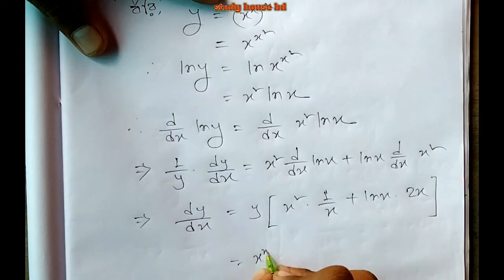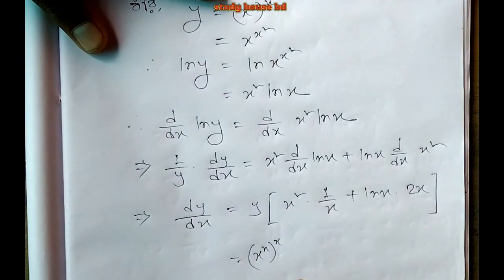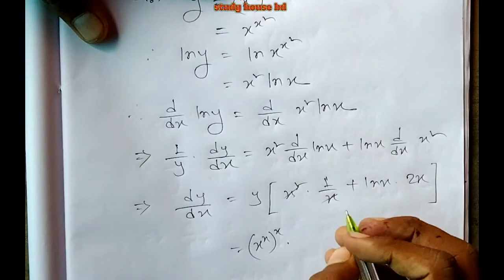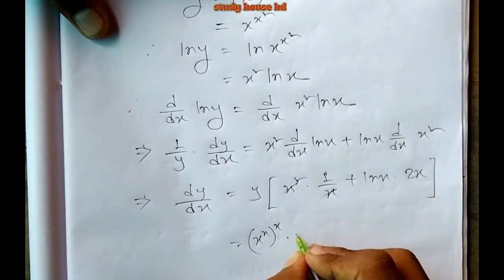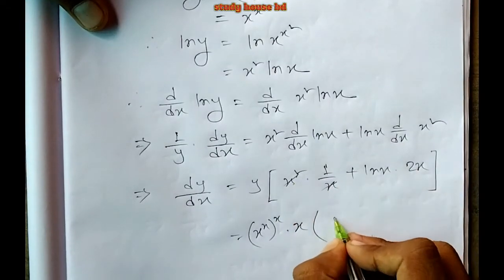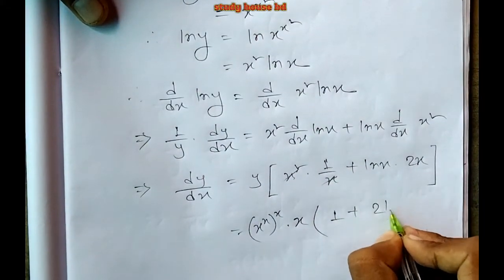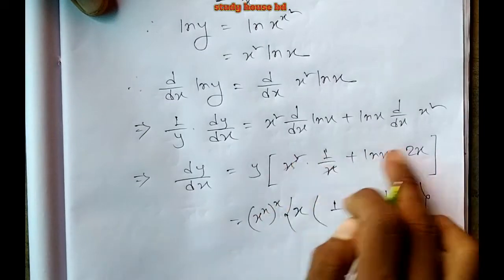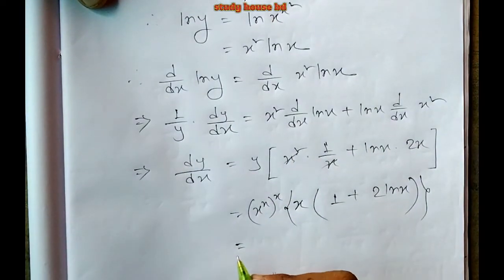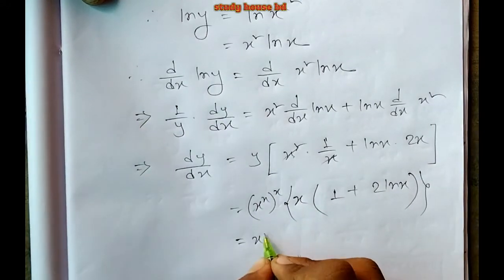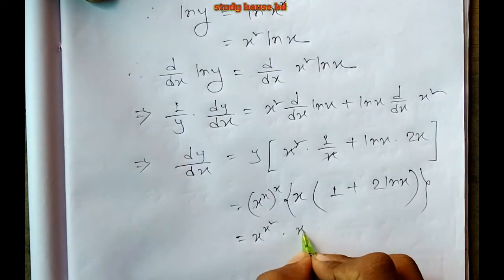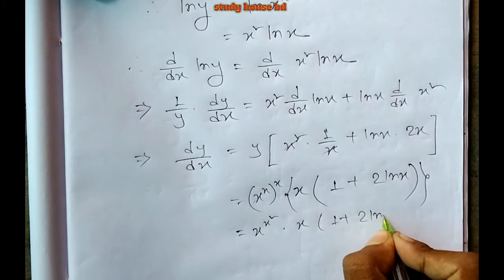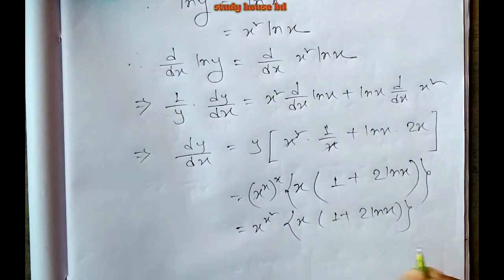Taking x common from the expression x plus 2x log x, we get x times (1 plus 2 log x). So the final answer for d/dx of x squared log x is x times (1 plus 2 log x).